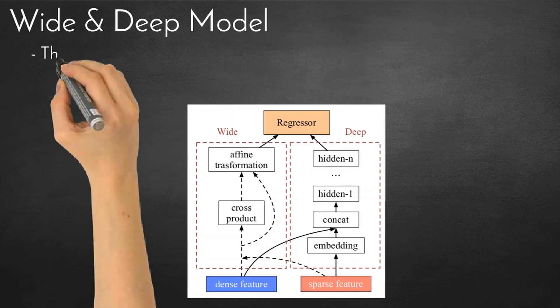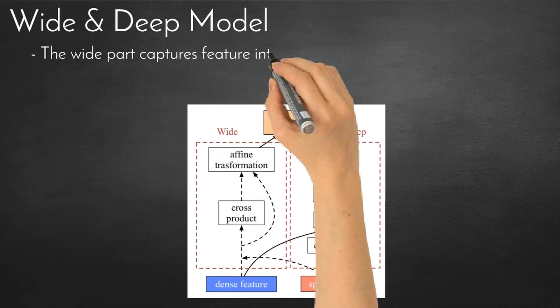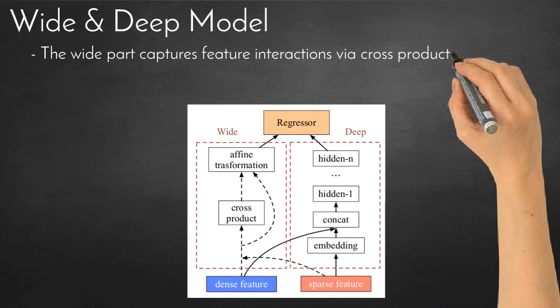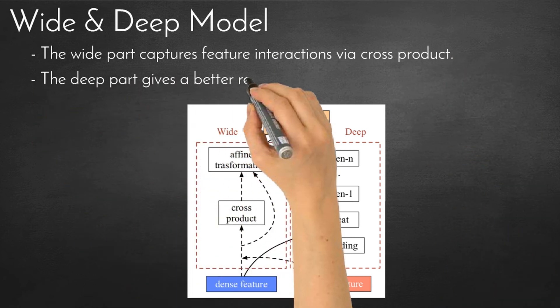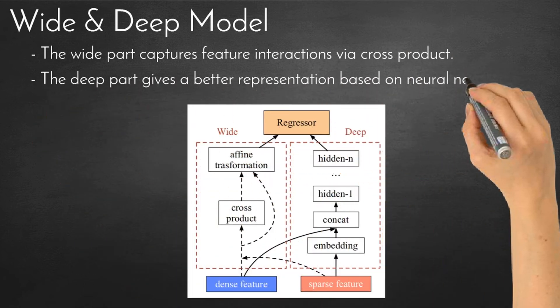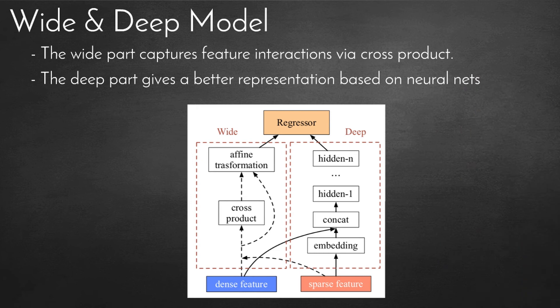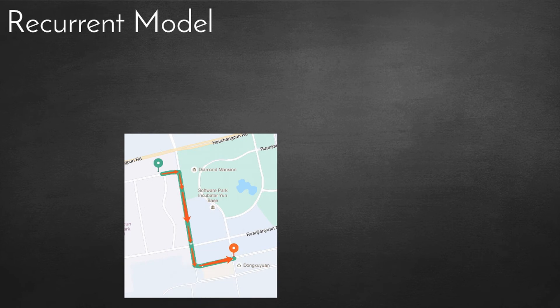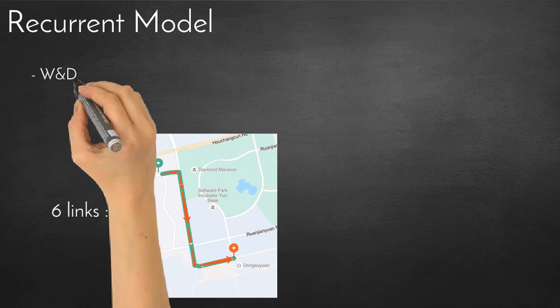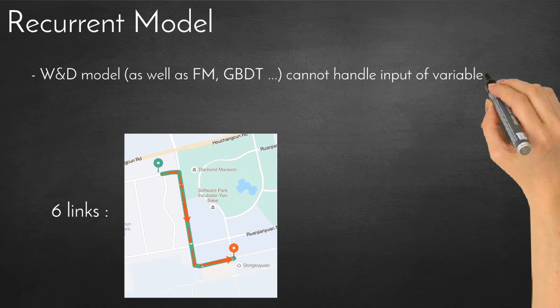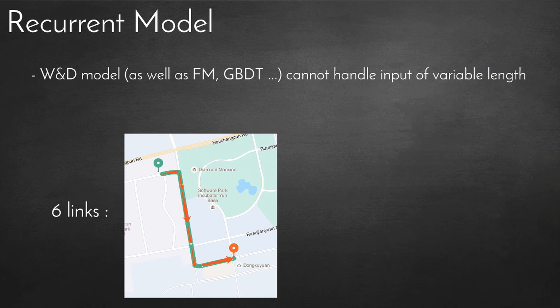We use the wide and deep model to learn global features. The wide part captures feature interactions via cross-product, and the deep part gives a better representation based on neural nets. A path consists of many links, and the number of link features varies across trips. The wide and deep model as well as FM and GBDT cannot handle such features.